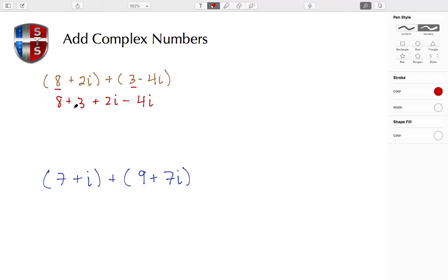So we can combine these like terms. 8 plus 3 gives me 11, and then 2i minus 4i gives me negative 2i. So it's just that simple when adding complex numbers.